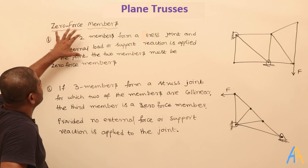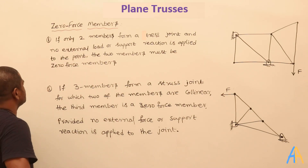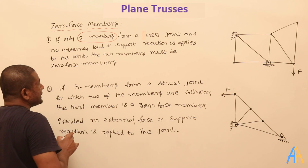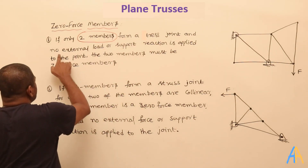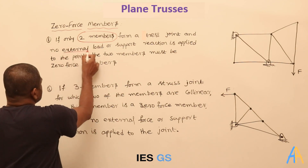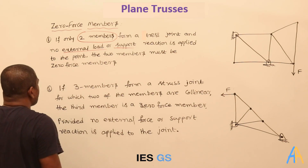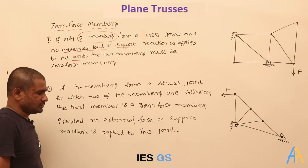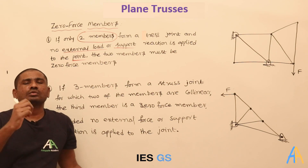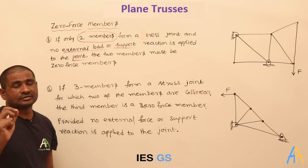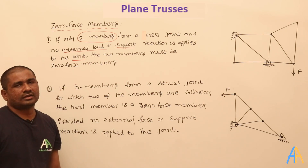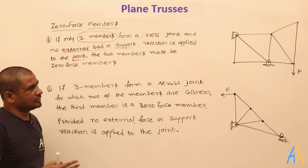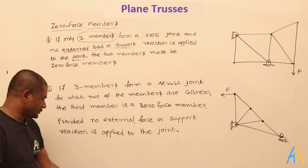The first condition: if only two members form a joint at a junction under no external load, and no support reaction is applied to that point, then the two members must be zero force members. This means there is a joint at which only two members are forming that joint, with no external force and no reaction force — in that case, the two members forming that joint carry no force.